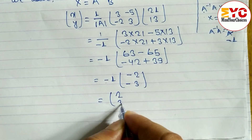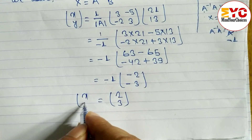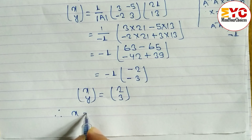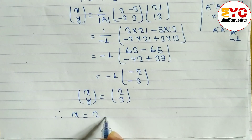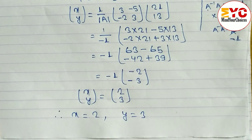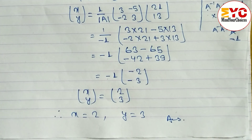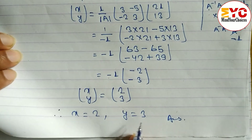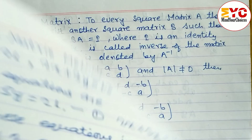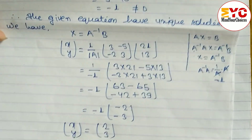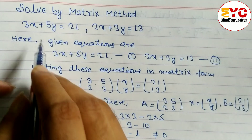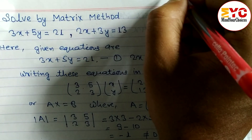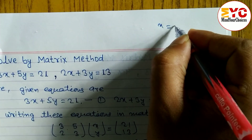After multiplying by minus 1, minus 2 becomes 2 and minus 3 becomes 3. So the value of [x; y] equals [2; 3], meaning x equals 2 and y equals 3. This is the answer by using the matrix method.